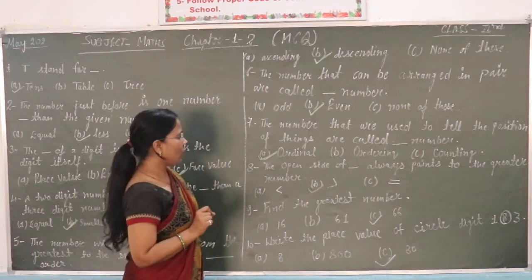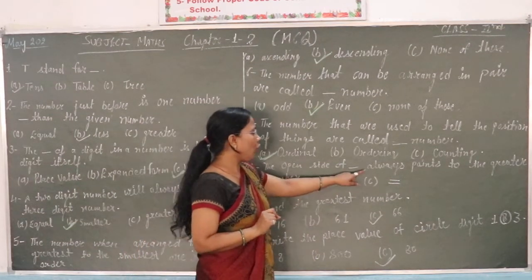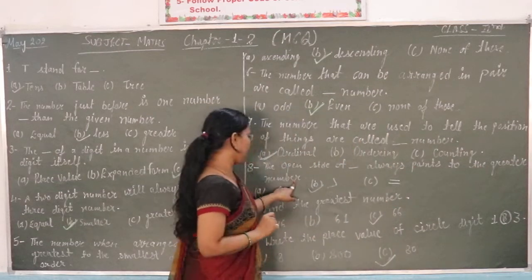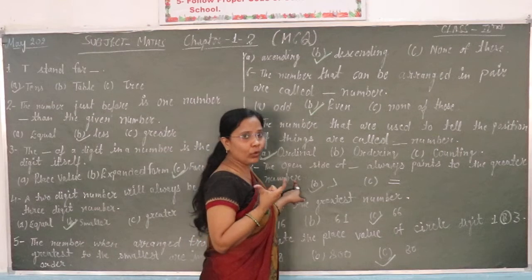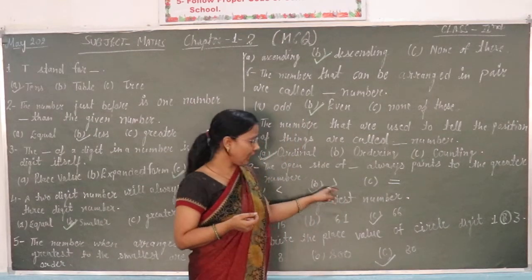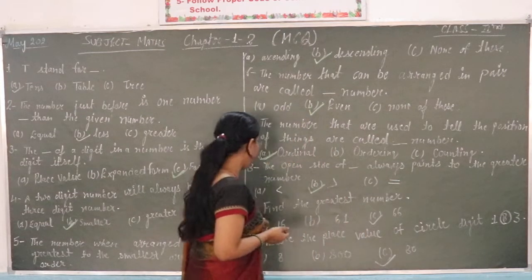The open side of blank always points to the greater numbers. Greater number symbol we show in class. The answer is greater than symbol.